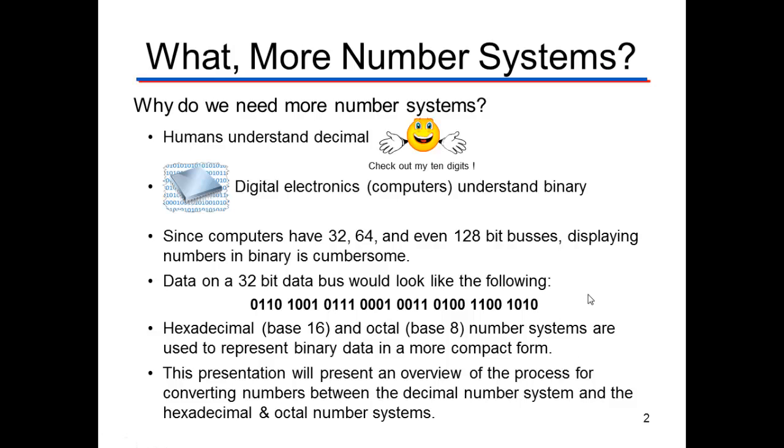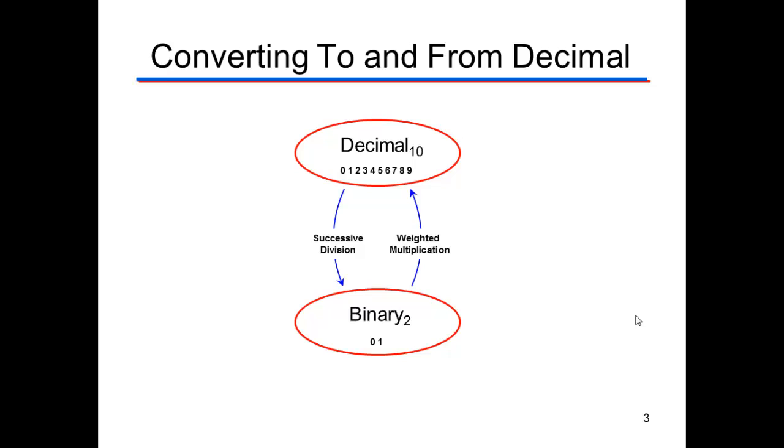Hexadecimal, which is base 16, and octal, base 8 numbers, let us represent binary data in a more compact form. So we're going to go through how you do the conversions.